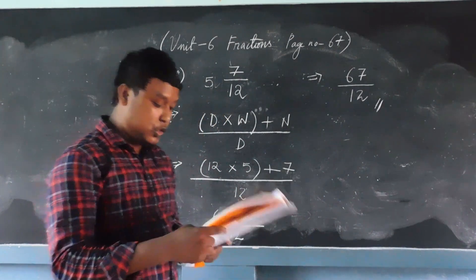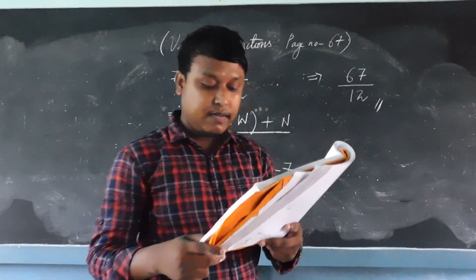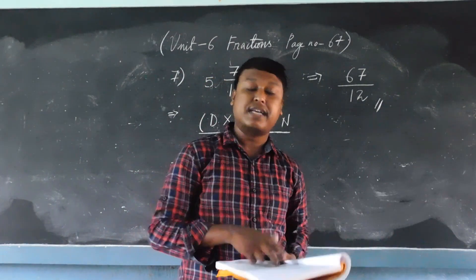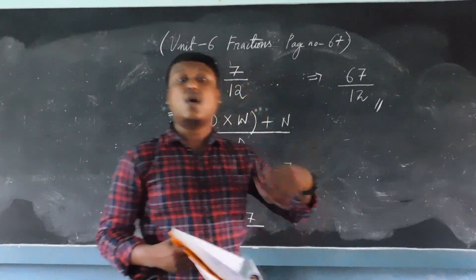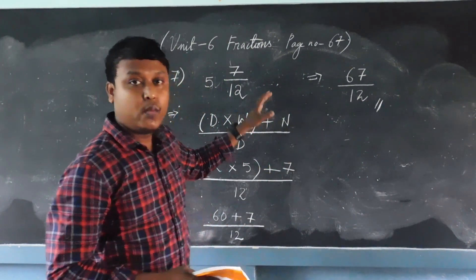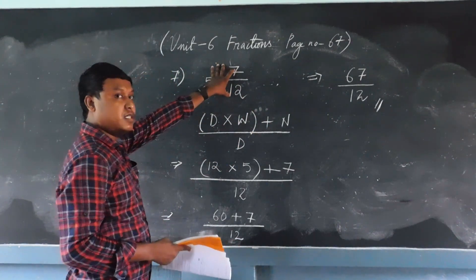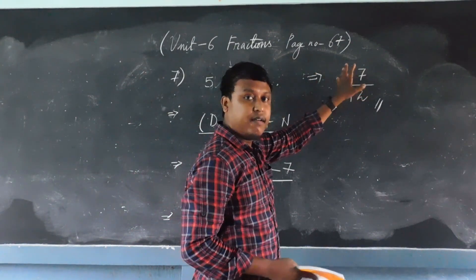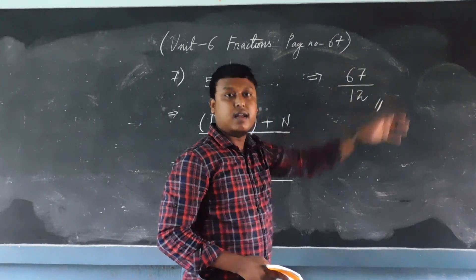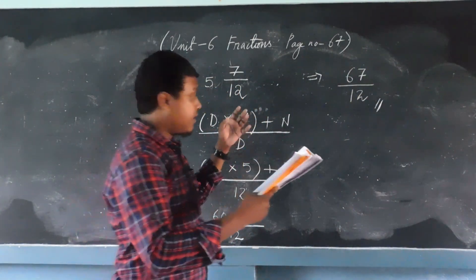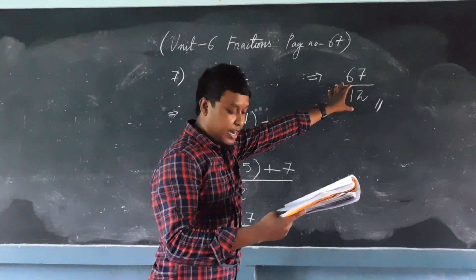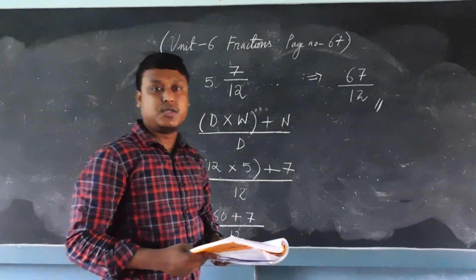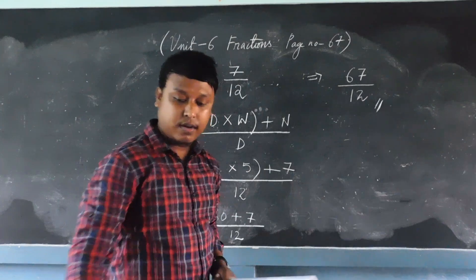Let's do question number 2 now. That is, convert the following improper fractions into mixed numbers. Now we have to do the opposite — in the first question we converted a mixed number into an improper fraction, and now in question number 2 we have to convert an improper fraction into a mixed number.